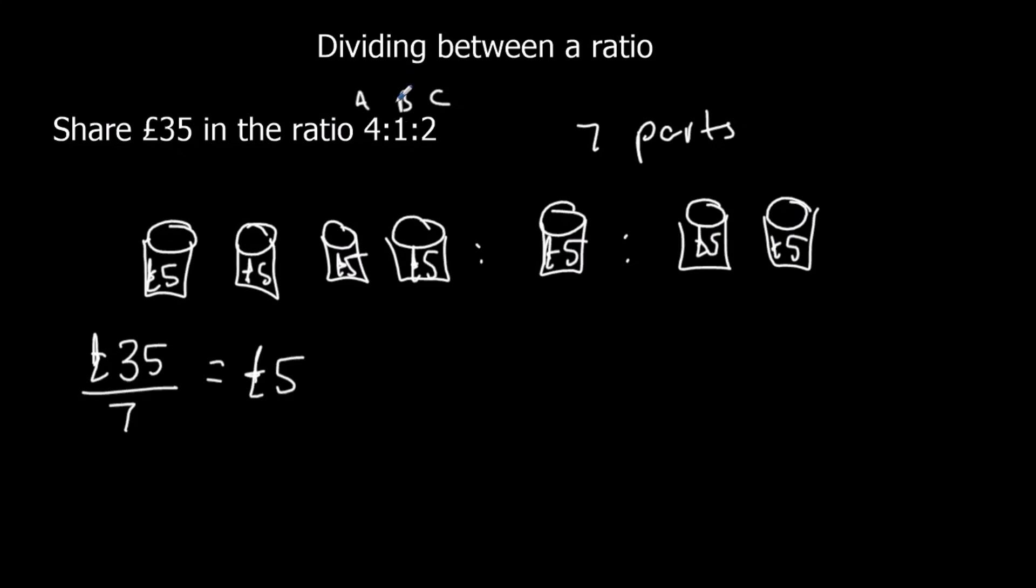So then we look at how much each one's got. So the first one's got 4 parts, 4 cups. So that's 4 times 5, which is 20. The second one's 1 times 5, which is 5. And the third person's got 2 fives. And they've got 10.